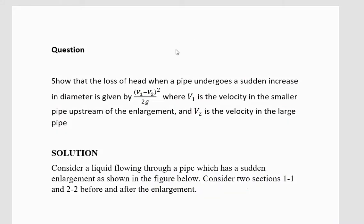Hello everyone. In this discussion we are going to look at the head loss due to sudden increase in diameter, or just a sudden enlargement in the pipe section. This is going to be discussed following a guiding question which says: show that the loss of head when a pipe undergoes a sudden increase in diameter is given by (V1 minus V2) squared divided by 2g, whereby V1 is the velocity in the smaller pipe upstream of the enlargement and V2 is the velocity in the large pipe.